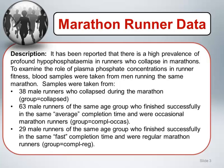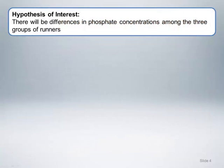29 male runners of the same age group who finished successfully in the same fast completion time and were regular marathon runners. This group is referred to as the completed regular runner group and will be denoted by COMPL-REG. The hypothesis of interest is that there will be differences in phosphate concentrations among the three groups of runners.